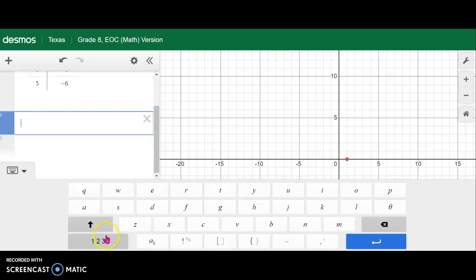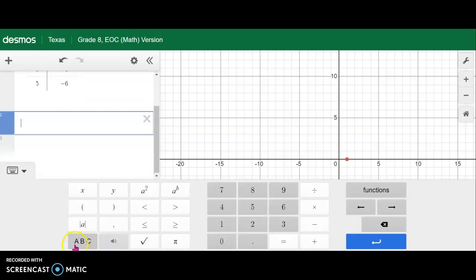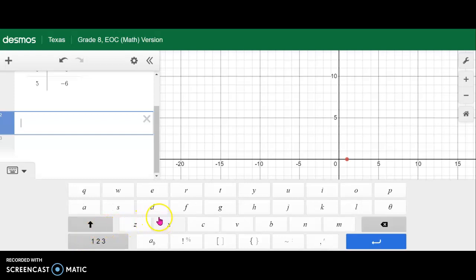So our equation, notice what I just did. I hit the abc to go to the letter keyboard. So y. But remember we don't want y, we want y sub 1. So what we're going to do is hit y and then right here a sub b, that's how you make a subscript. And then I can just use my keyboard to type a 1.